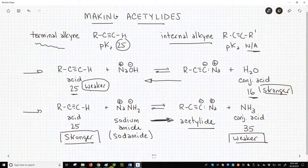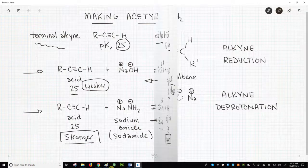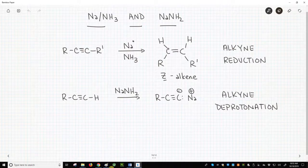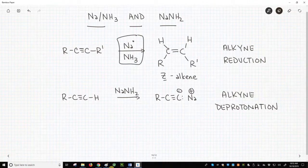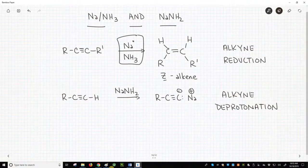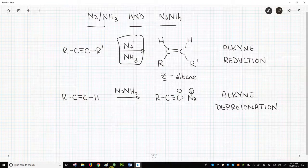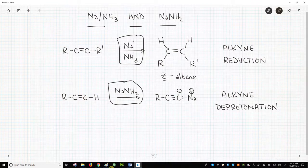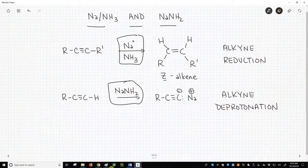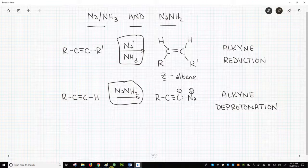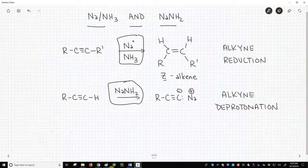One final comment, and we'll need a fresh slide. In a previous video in this playlist, we used sodium in ammonia NaNH3 to reduce alkynes to a Z-alkene. This is our top reaction. NaNH3 is different from NaNH2, sodium amide, which is a base for deprotonating terminal alkynes to make acetylides. Do not use these similar-looking reagents interchangeably. NaNH3 on the top is a source of electrons for reductions. NaNH2 on the bottom is a strong base for making acetylides.